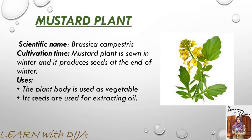The mustard plant's scientific name is Brassica campestris. It mostly grows in winter and produces seeds at the end of winter. It can be used as a vegetable and oil is extracted from its seeds.